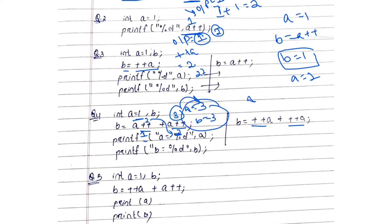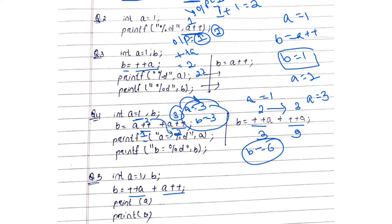If both are pre-increment, first a is increased: a is 1, so it becomes 2. Then ++a is encountered again, so a increases by 1 again — a becomes 3. Now 3 will be assigned, so b = 3 + 3 = 6.